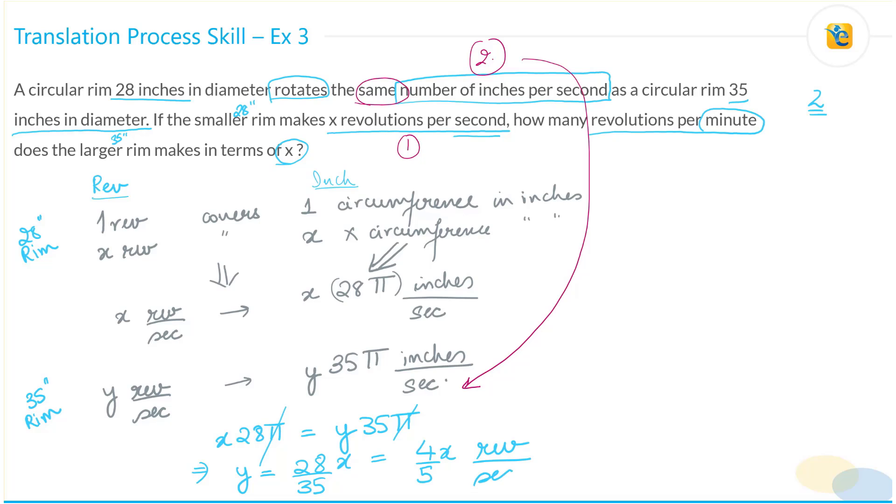What is it? Revolutions per second. Remember we were dealing with revolutions per second. But what is it that we need? We need revolutions per minute. So this is point number three. What do we get? We get 4X by 5 revolutions per second. We have to convert it into minutes. So let's do 60 seconds over one minute. The seconds gets canceled. What we get is 48X revolutions per minute.